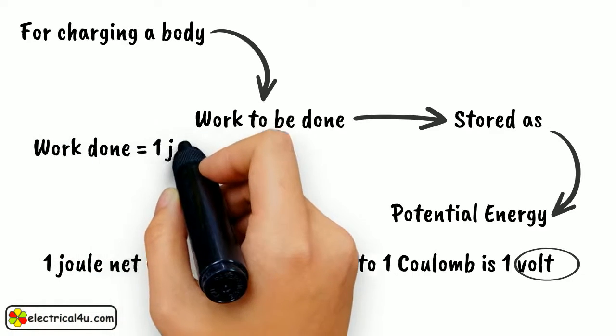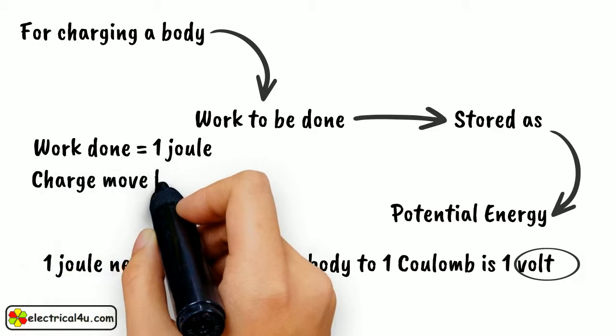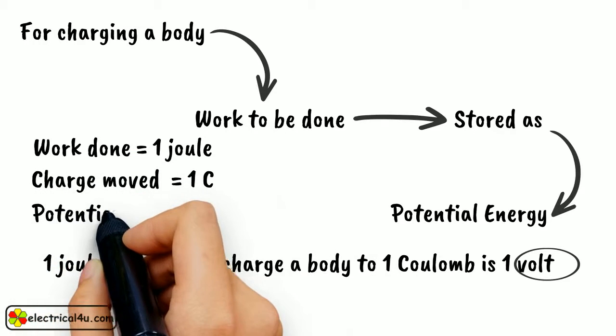When work done is one joule and charge moved is one coulomb, the potential is also called one volt.